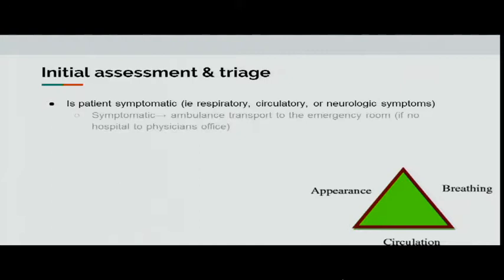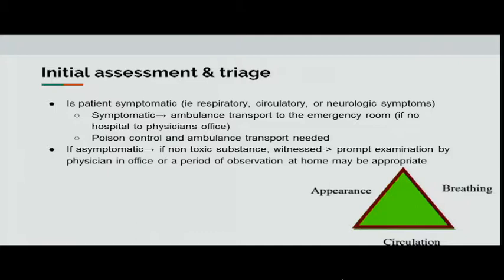The initial evaluation of a child poisoning may be performed in the office or emergency department. If a physician receives a call about a suspected poisoning, the first step is to assess whether the patient is symptomatic — respiratory issues, circulatory problems, neurological symptoms. If symptomatic, ambulance transport to the emergency room is needed. If asymptomatic, a non-toxic substance, or the event is witnessed, prompt examination in the office may be sufficient. There can also be a period of observation at home, which can be appropriate depending on how comfortable the guardian is and their access to transportation.